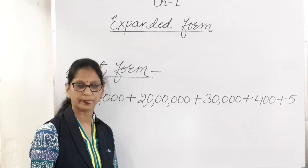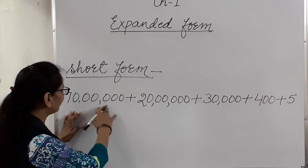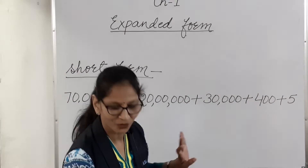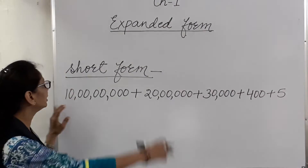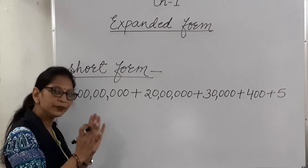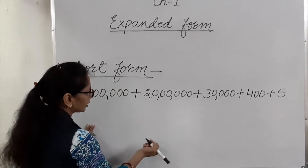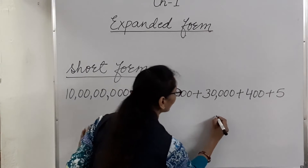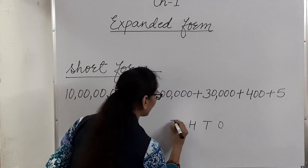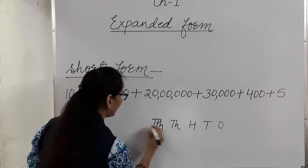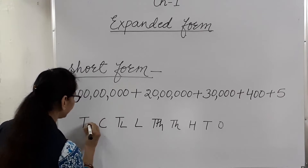Now I am telling you about short form. We have a number. Now we will write these numbers into short form. I am telling you a very simple way about short form. We will write the places first: ones, tens, hundreds, thousands, ten thousands, lakh, ten lakh, crore, and ten crore.